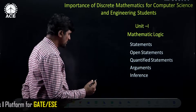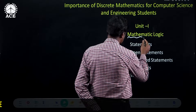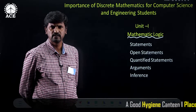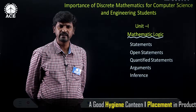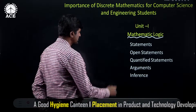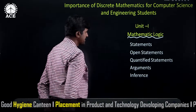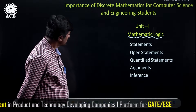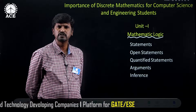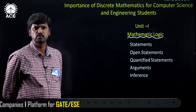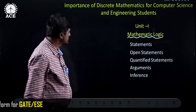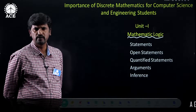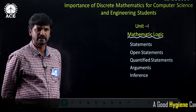The very first unit is mathematical logic. In this unit, there are two types of logics: first order logic and predicative logic. First order logic is about statements and predicative logic is about open statements. This unit is going to improve the logical thinking of a student, and they will be able to solve any problems related to mathematical logic.